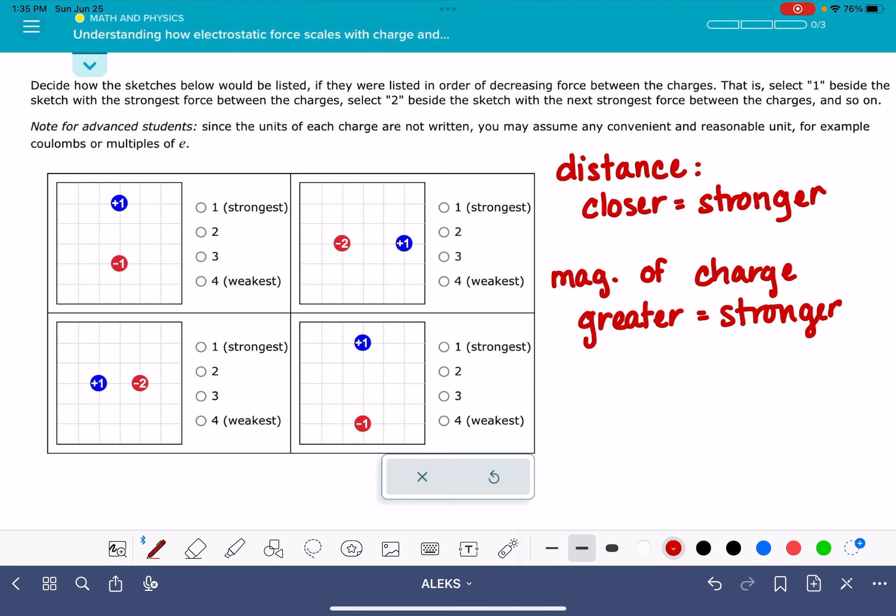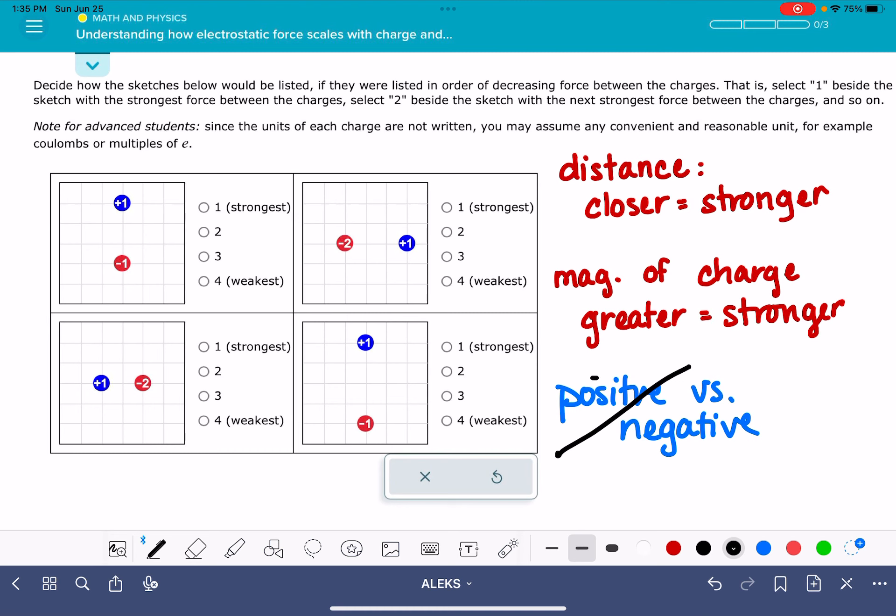One thing that does not contribute to this at all is positive charges versus negative charges. You're not going to pay any attention to that at all. So like in this particular problem, all of my scenarios have a positive charge combining with a negative charge. You may have a problem where they're both positive or they're both negative. It doesn't make a difference at all. The sign of the charge is completely irrelevant in this problem.